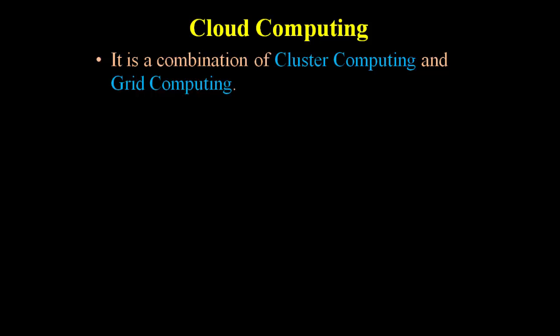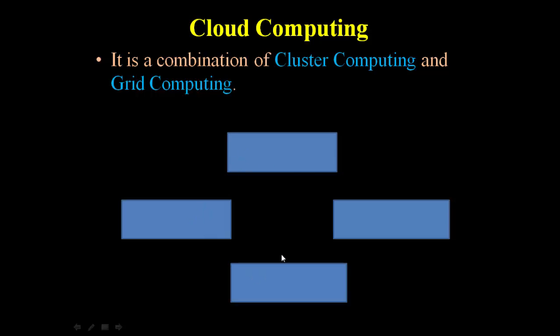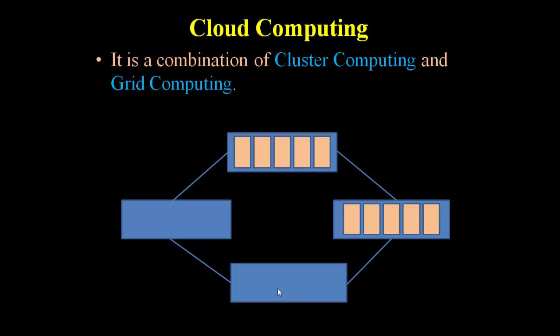Now the next and last is our cloud computing model. Cloud computing is a combination of cluster computing and grid computing. These are different servers available on different locations — they may be different types of servers. So once we connect all these servers, that is like grid computing. Also, these servers themselves are very large servers — each may be a cluster of servers. These clusters are on different locations, all connected to each other, and together they look like and act like a single server. And this is known as cloud computing.